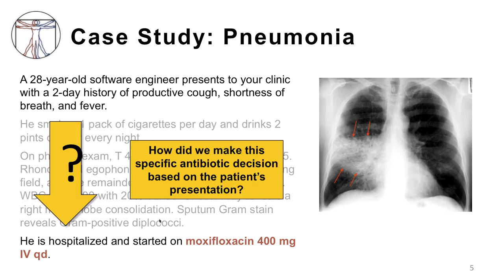When physicians encounter an infection such as this, how do they make rapid treatment decisions with regard to initial, or empiric, antibiotic therapy? The clinical presentation is often complex, and unlike other types of diseases, the assessment of infectious diseases has the added complexity of microbiology, including known or suspected microbial pathogens and their susceptibilities or resistance to the potential antibiotics that you might choose.